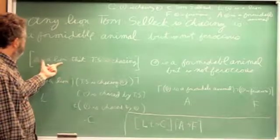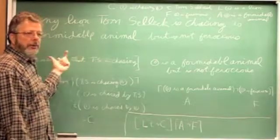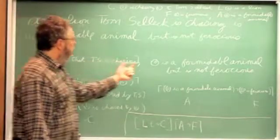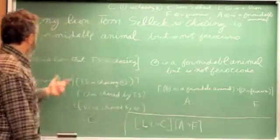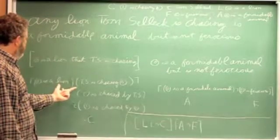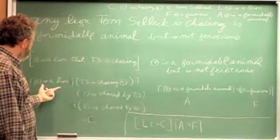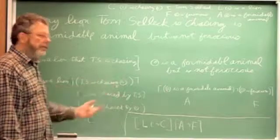So what is this property? The property is that being a lion that Tom Selleck is chasing, we're talking about these things. And the property that they have is being a formidable animal, but not being ferocious. Now, if we look at this, this is clearly a gloomy combination. It's saying that zero is a lion and Tom Selleck is chasing zero.